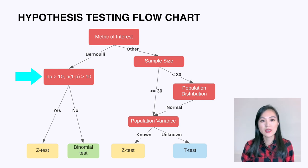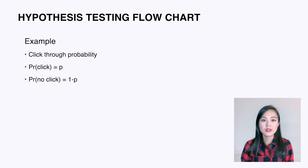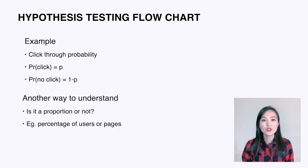First of all, we want to know the metric we want to evaluate. If the metric we are interested in follows a Bernoulli distribution, we need to further check the sample size. The Bernoulli distribution is a distribution with a random variable taking the value 1 with probability p and the value 0 with probability 1 minus p. A practical example is click-through probability — the proportion of users who click a button on a web page is p and those who don't is 1 minus p.